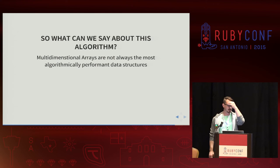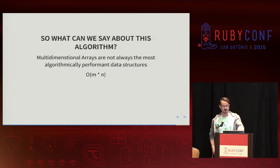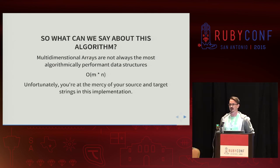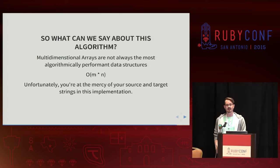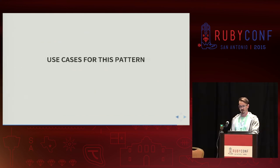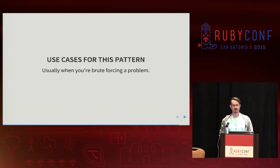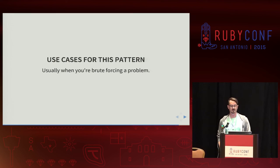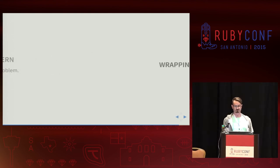What can we say about this algorithm? It's not really the most performant — you're at the mercy of the length of the two strings you're comparing. This implementation of Levenshtein is probably not the fastest or most optimized, but it is pretty simple to understand. I like to call this use case 'brute forcing a problem' — until you can come up with a more elegant solution, sometimes it's worth committing to the brute force implementation and figuring out how to make it better.